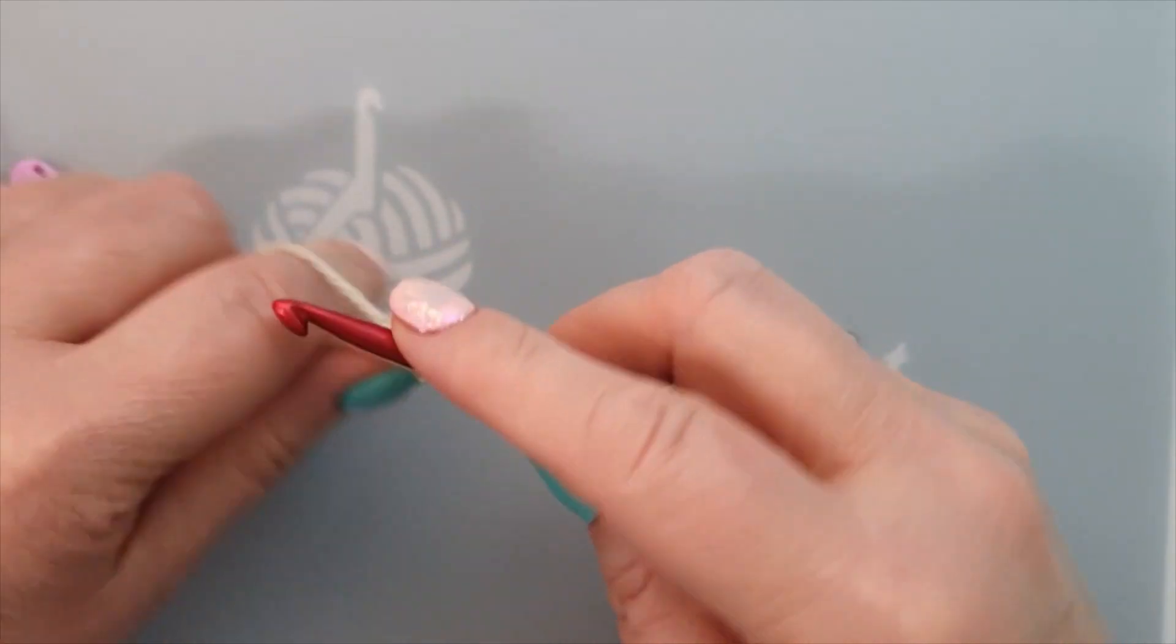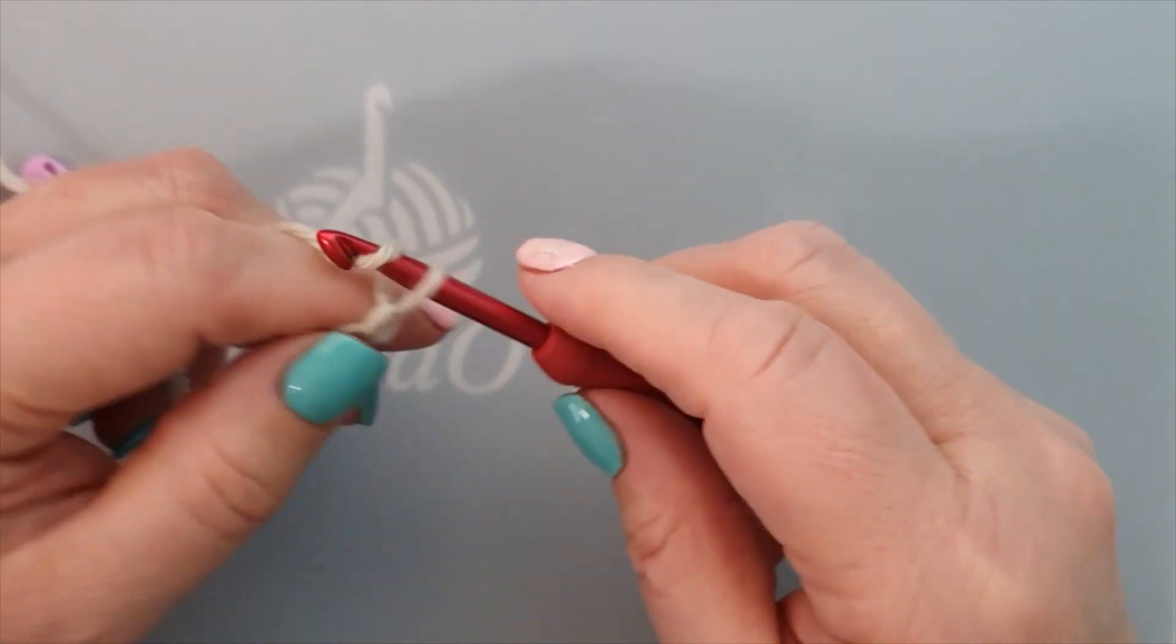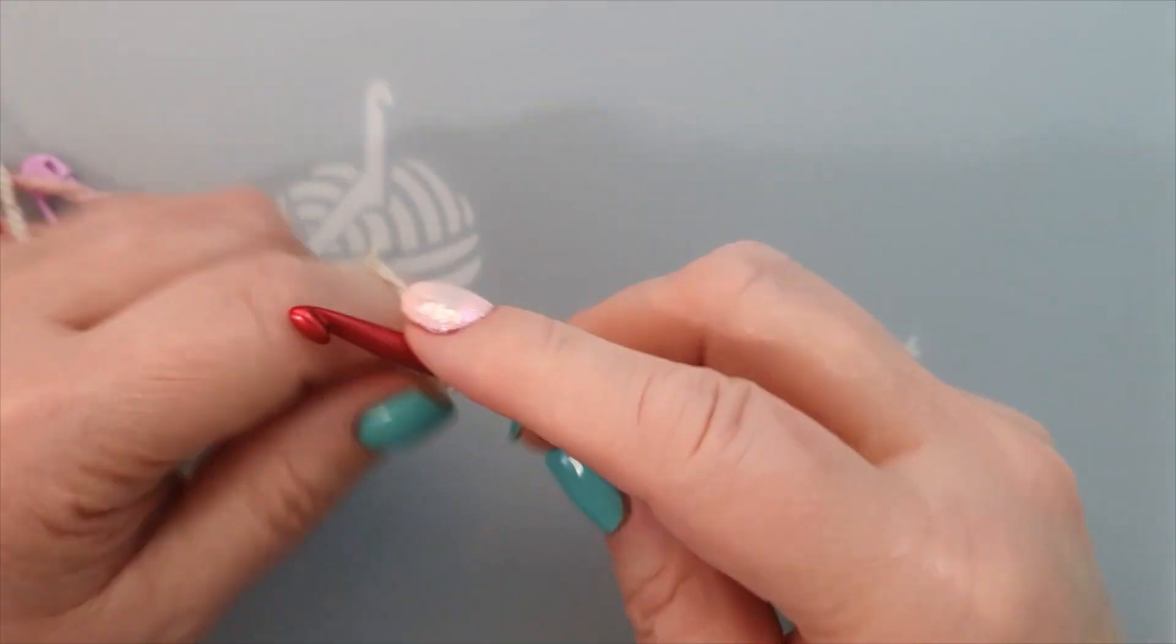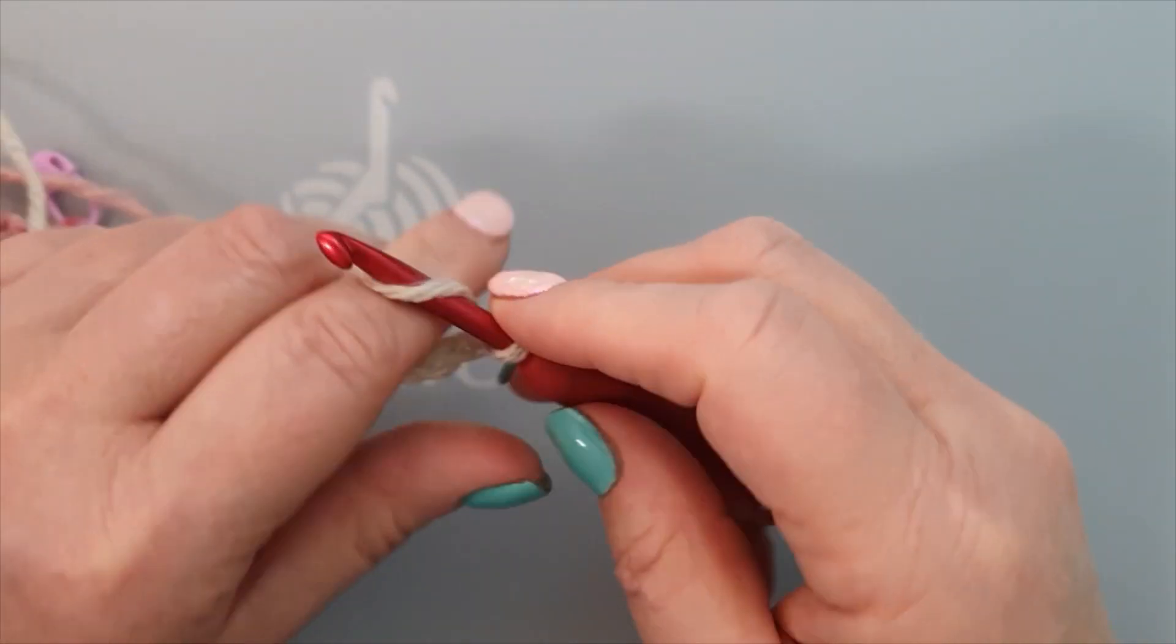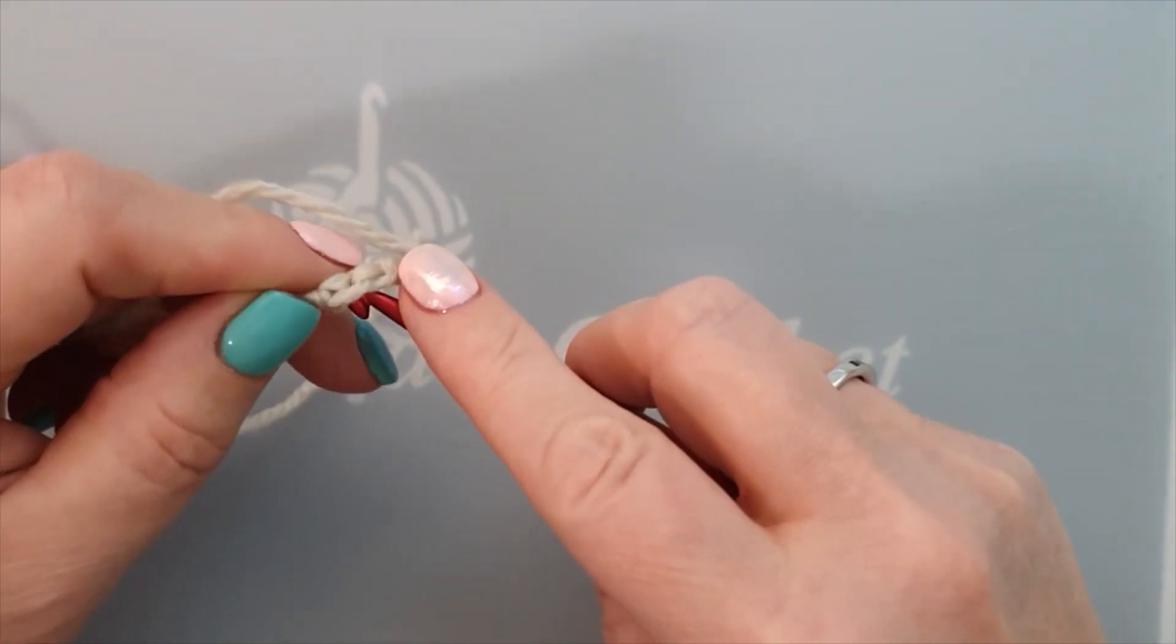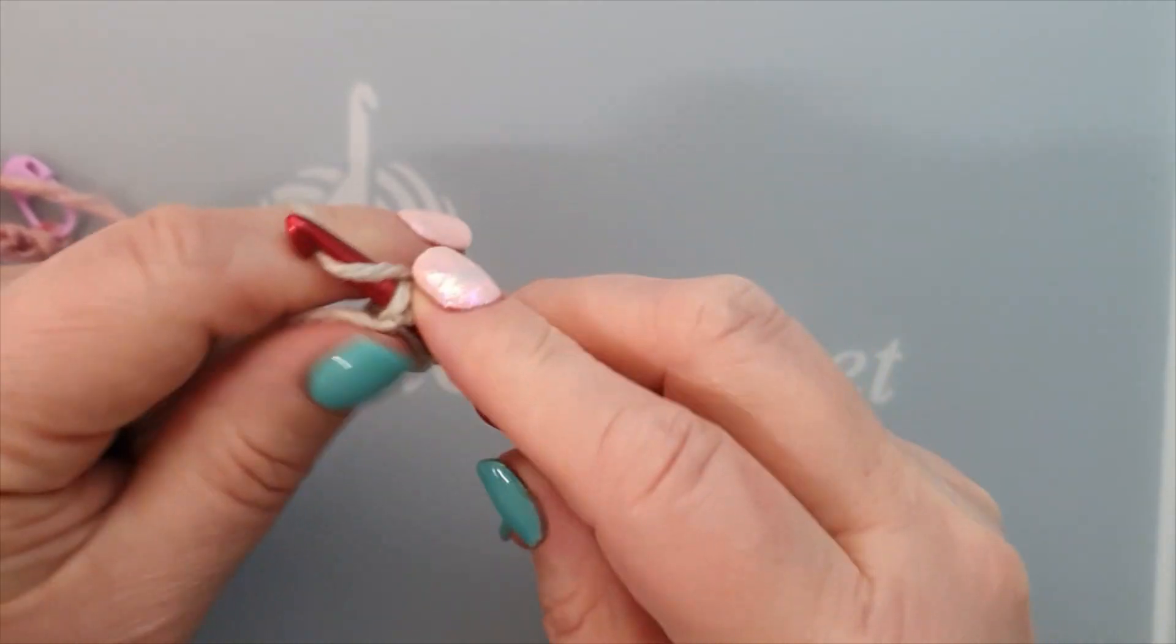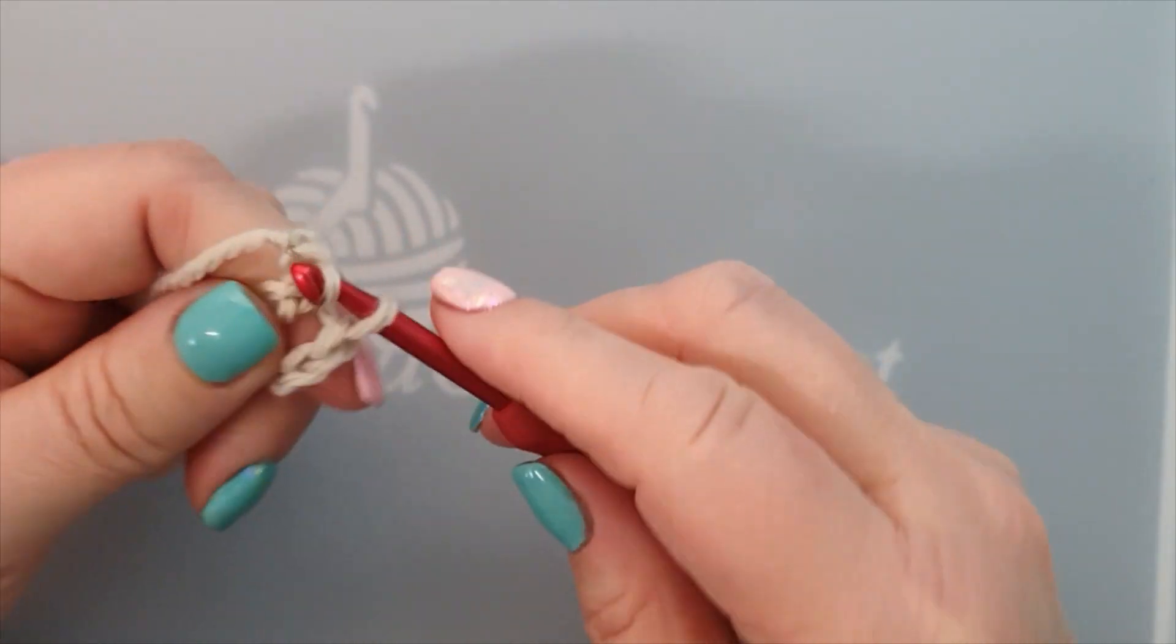Okay, we start, chain one, two, three, four, five, six, seven, and eight. It's the same as the first round. Then you get your two loops at the start, and you join them with a slip stitch.